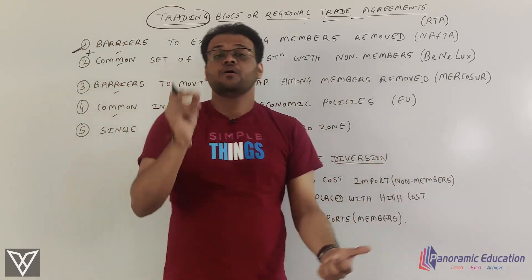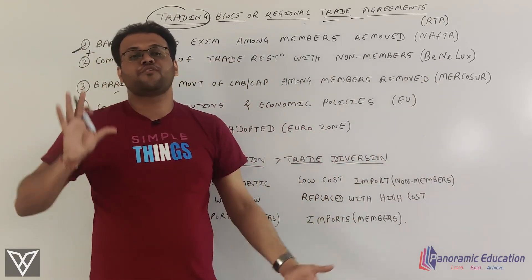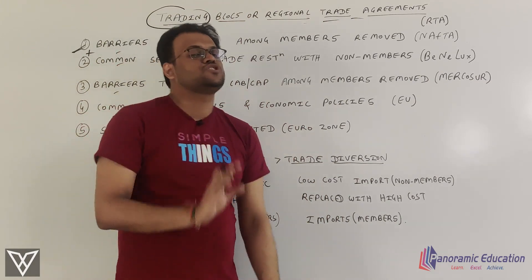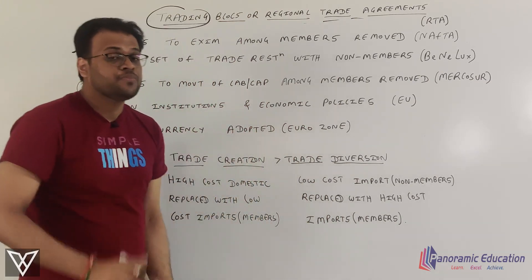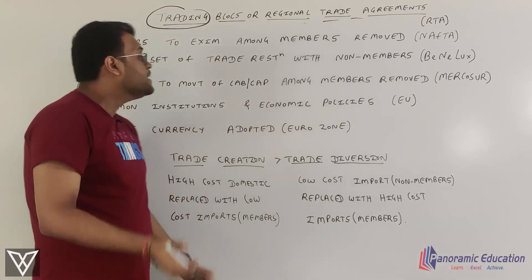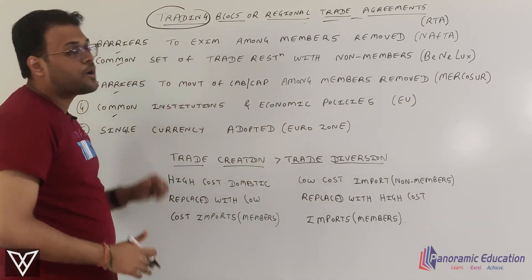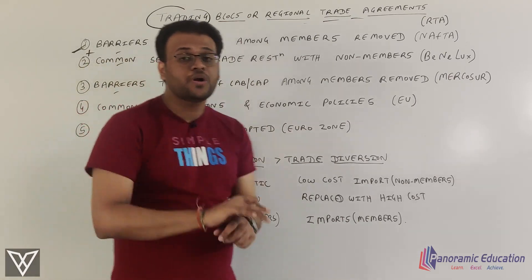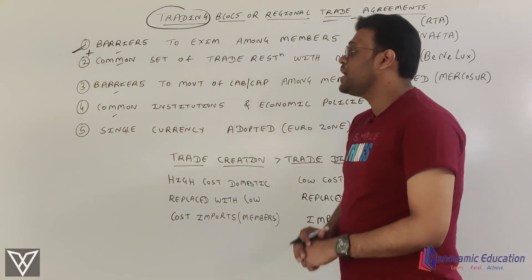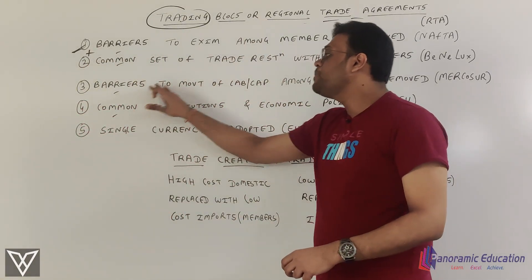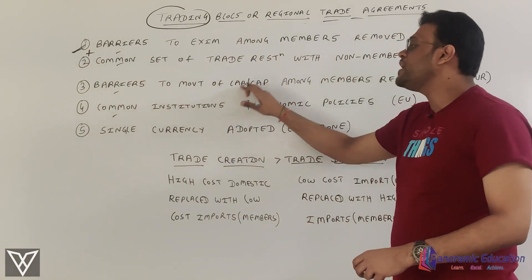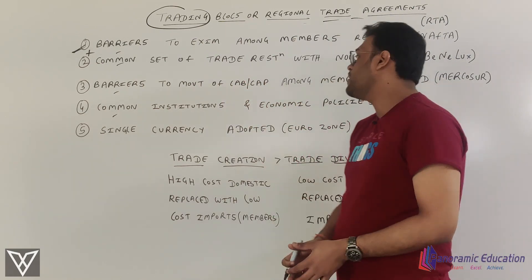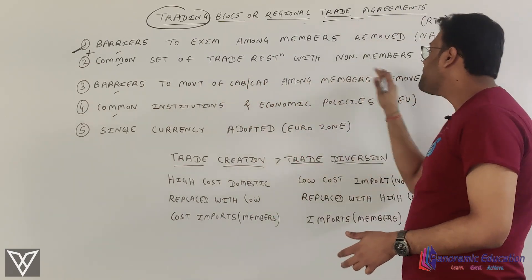Then you go to the third trading block — the common market — where in addition to the previous features, the movement of labor and capital between member countries is also freed from barriers.